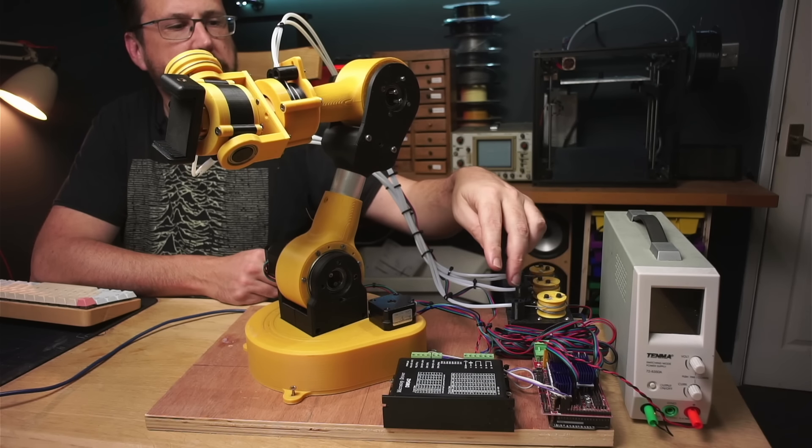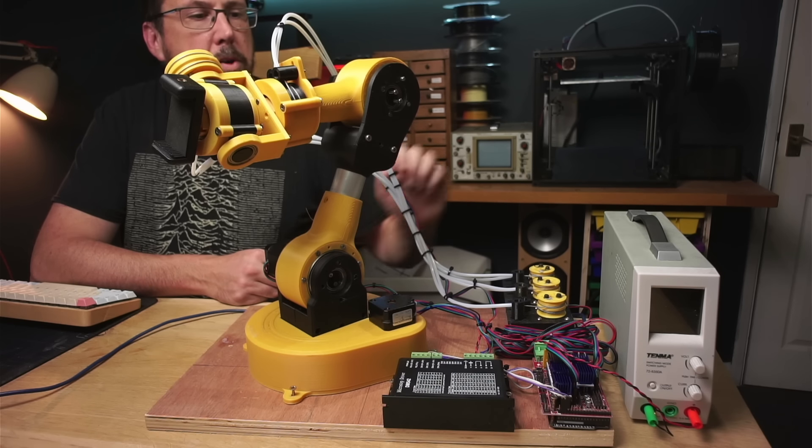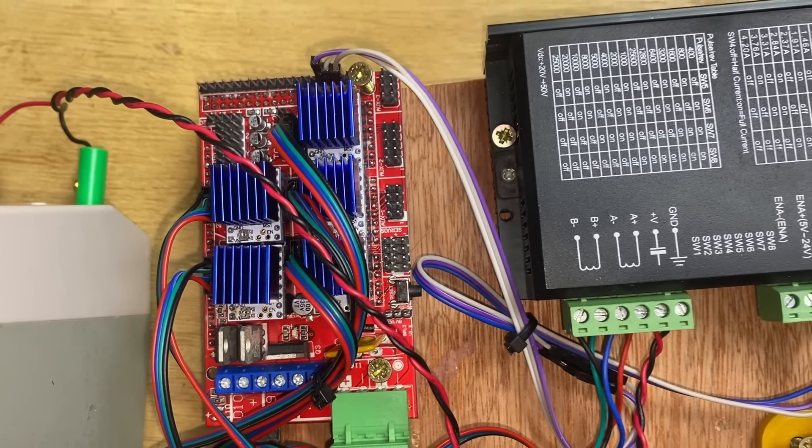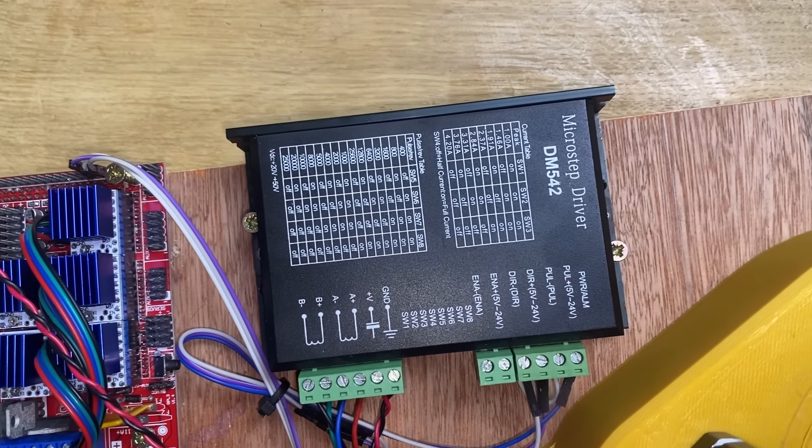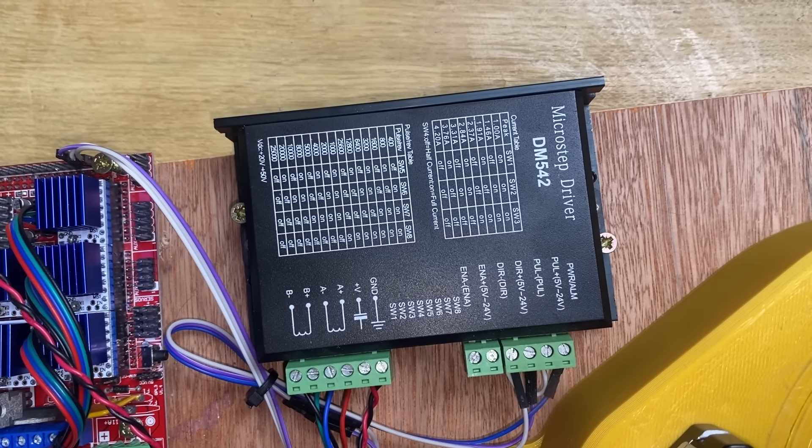I've also hooked up some electronics and put it onto a temporary baseboard for now. For the electronics I'm just using a simple RAMPS board with TMC2208 drivers, and then for the shoulder joint that takes the most weight I'm using this large DM542 driver.